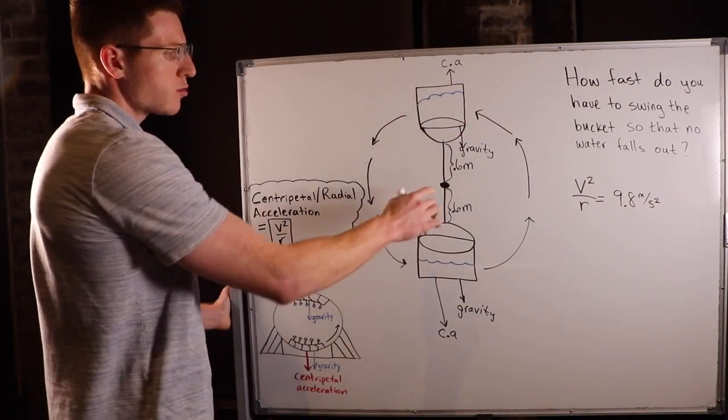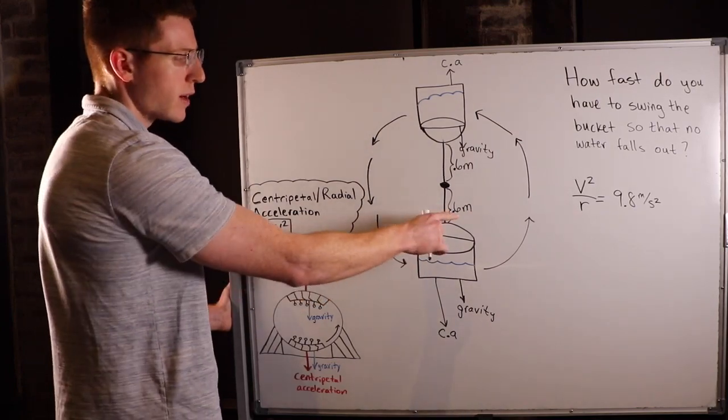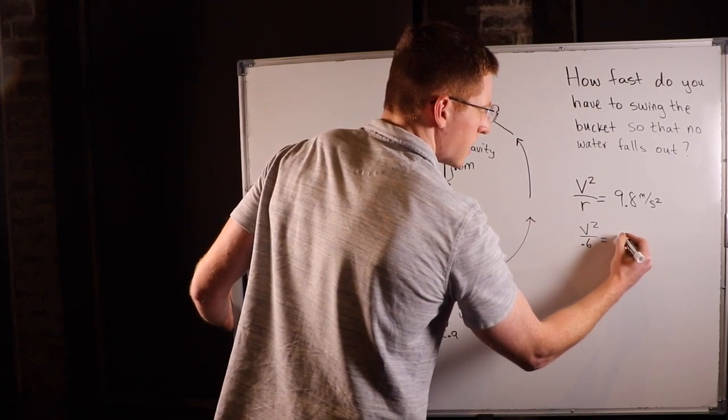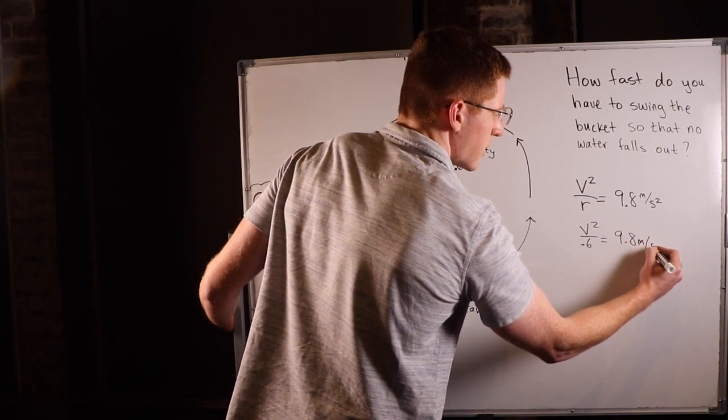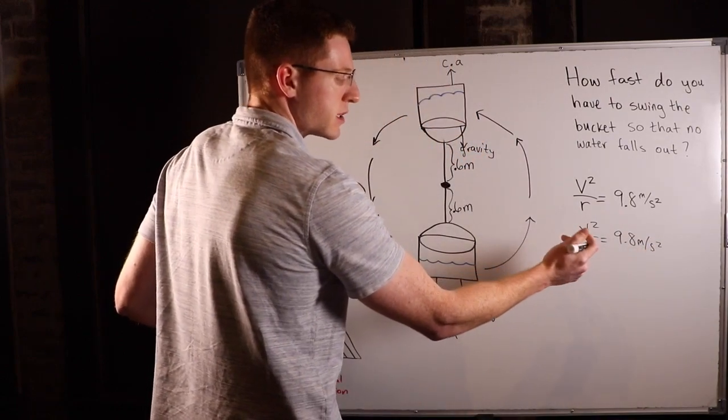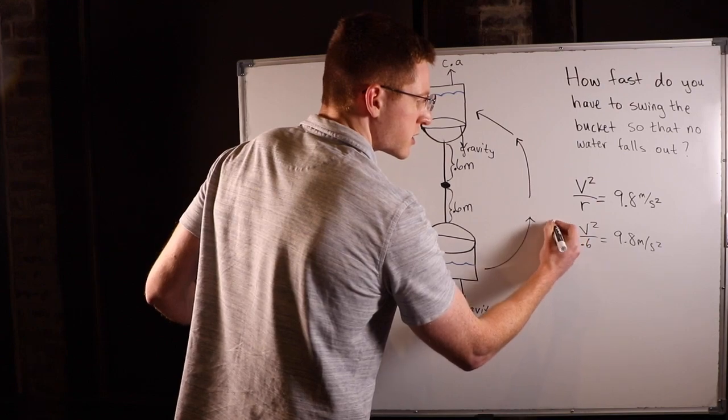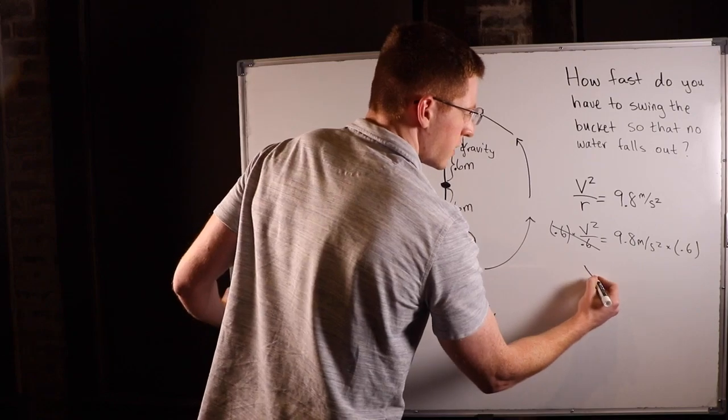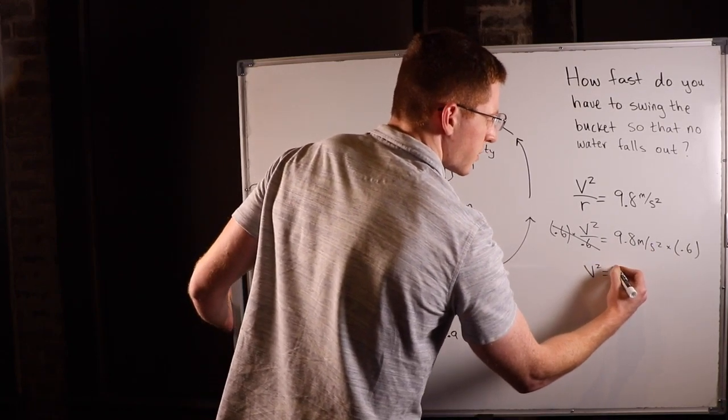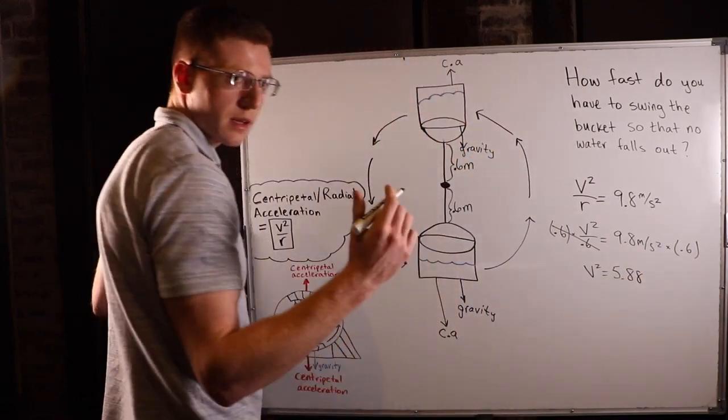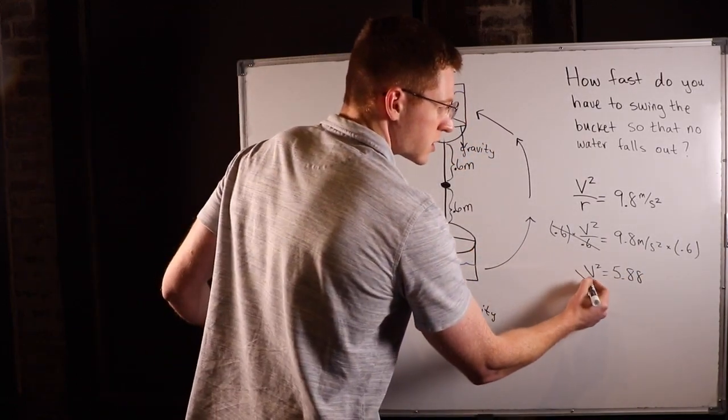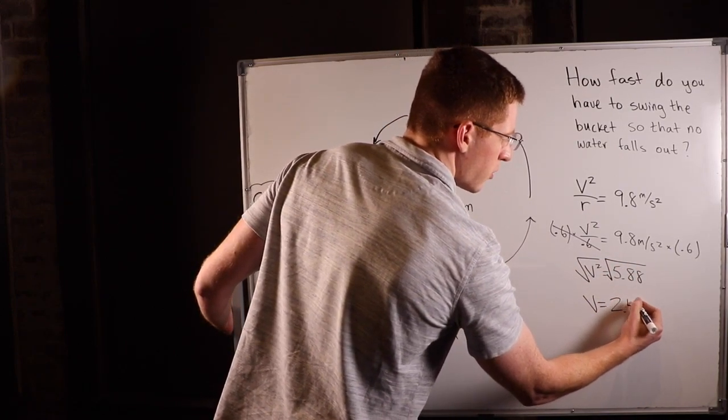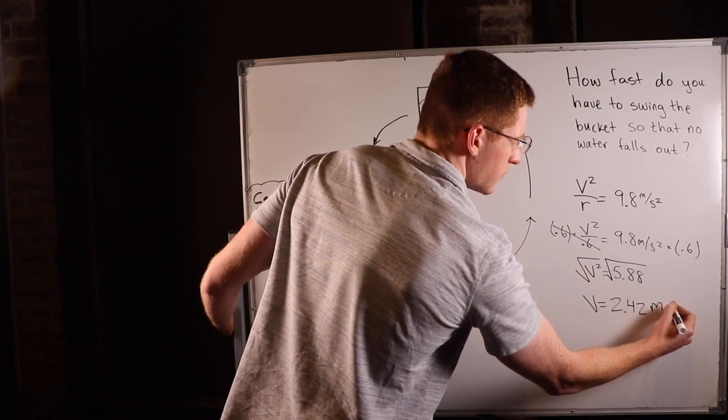We know our radius, we were given that in the problem, it's 0.6 meters. So I'll go ahead and write that in. v squared over 0.6 equals 9.8 meters per second squared. What we can do to get v by itself is we'll first multiply both sides by 0.6, and then that'll cancel out. So v squared equals 5.88, if you have a calculator. Then we'll take the square root of v, and we finally get v equals 2.42 meters per second.